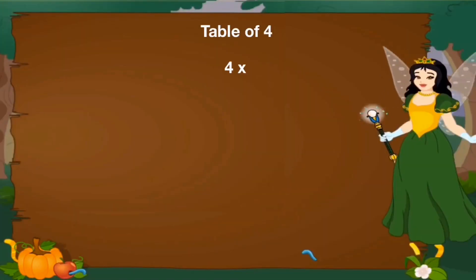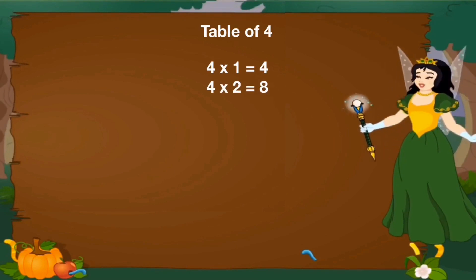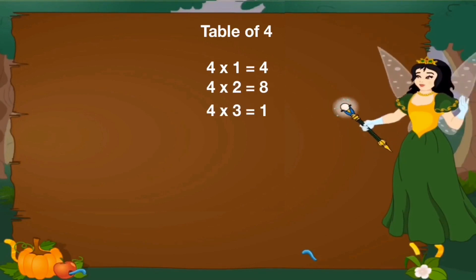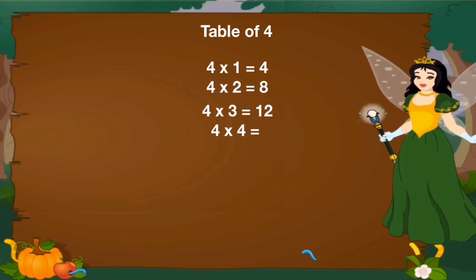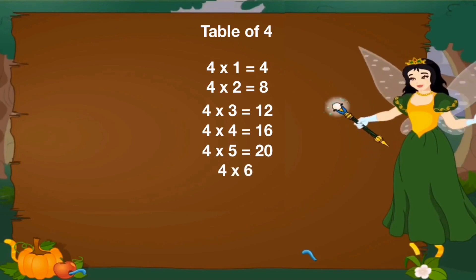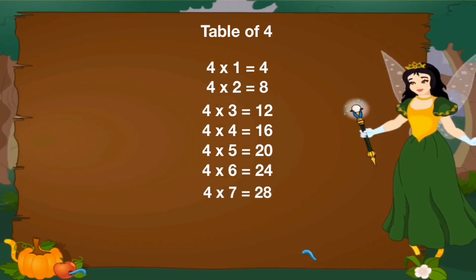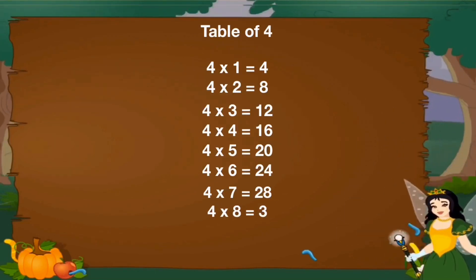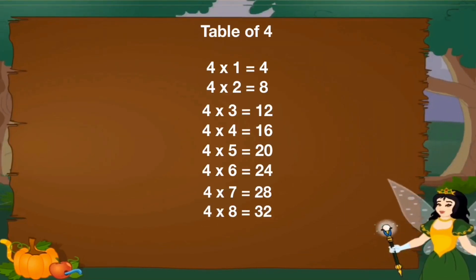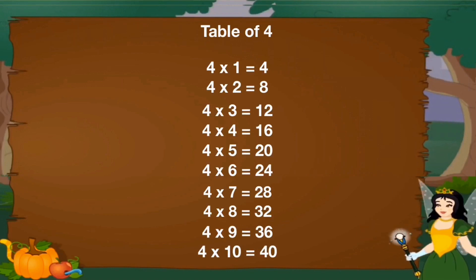Let's revise table of 4. 4 1's are 4, 4 2's are 8, 4 3's are 12, 4 4's are 16, 4 5's are 20, 4 6's are 24, 4 7's are 28, 4 8's are 32, 4 9's are 36, 4 10's are 14.